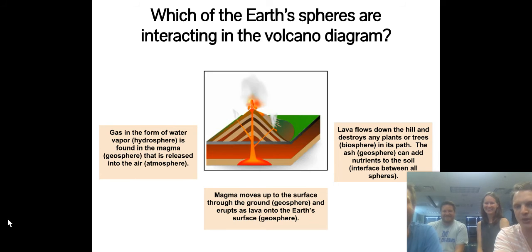So if we take a look, the lava flows down the hill and destroys plants and animals. So that's pretty straightforward. The lava, again, is the geosphere, and now it's interacting with the biosphere. So, I mean, I think you're probably getting the hang of it with the sphere interactions. We've got a few more here, but it's really just kind of a review from before.